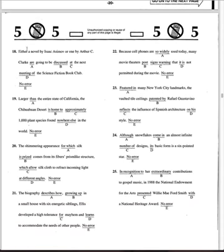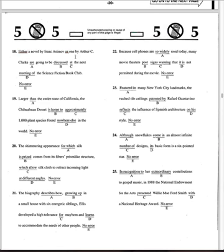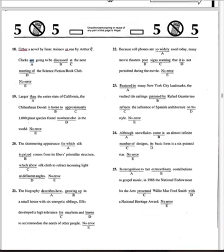Number 18: 'Either... or' — I'm going to underline that. The sentence has 'or' so it's correct. 'Either she is correct, either a novel by plan or one by plan' — when you have either/or, the subject is going to be singular. So number 18 is definitely that.